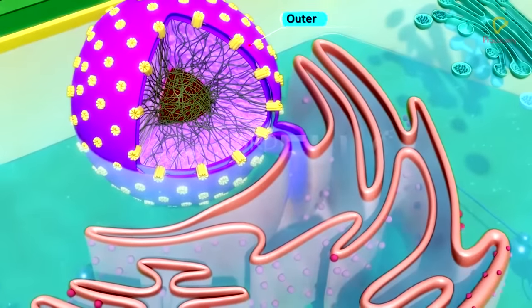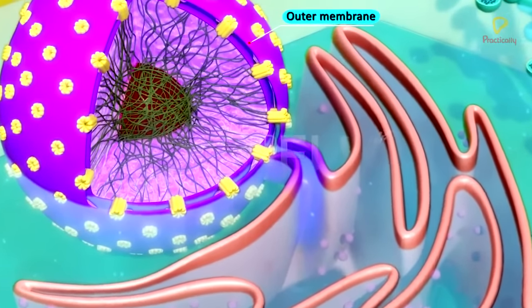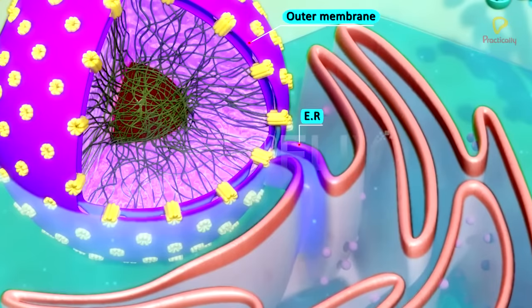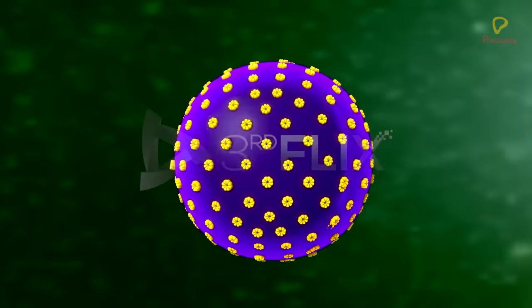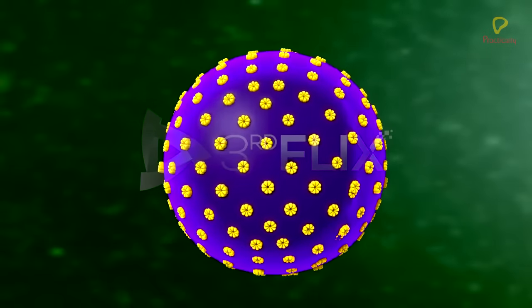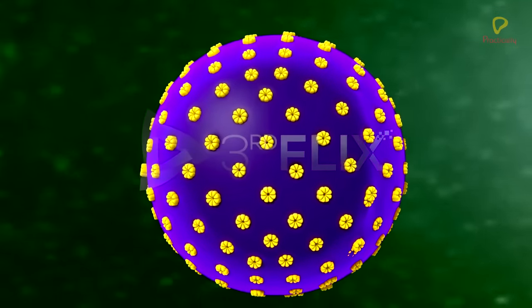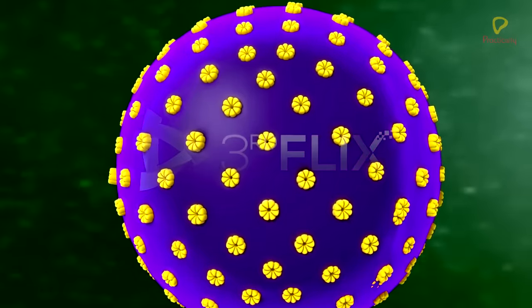The outer membrane of the nuclear envelope is usually continuous with the endoplasmic reticulum. At many places, the nuclear envelope is interrupted by minute pores called nuclear pores.